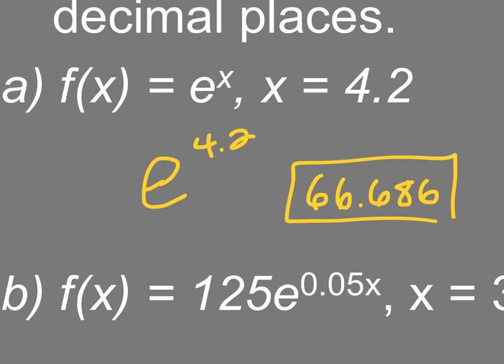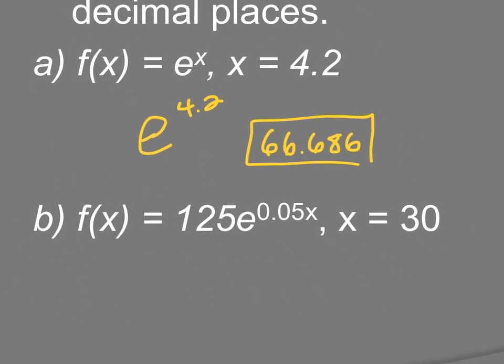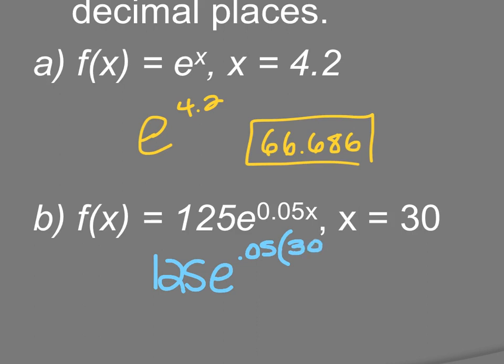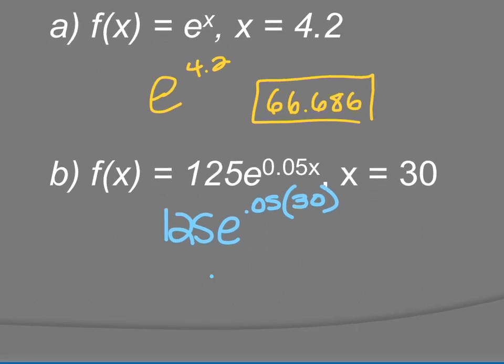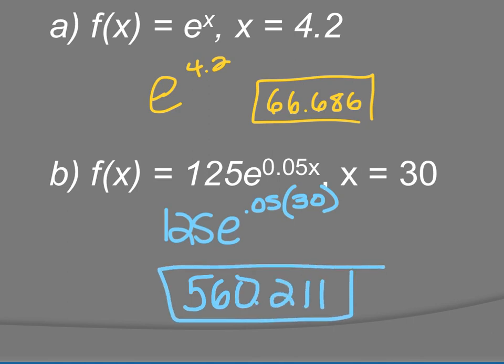So unless it says otherwise or unless we're doing money, which we're going to get to in a minute, do three decimal places. B is now 125 e to the 0.05 and I multiply that times 30, so you can type that all into your calculator, 125 e 0.05 times 30 and I get 560.211. So these should be easy. These are the ones that in your calculator do the work, just be careful on your rounding, don't make a silly mistake.